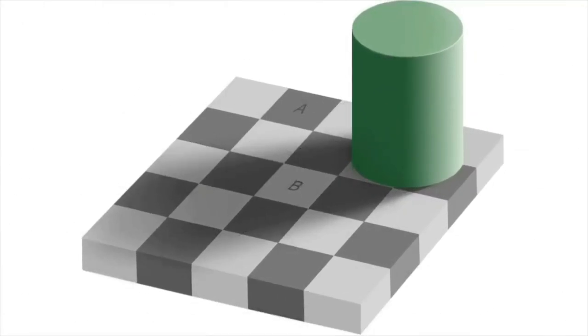So the picture shows a checkerboard with light and dark squares, partly shadowed by a green cylinder on the right corner. Now, let's focus on the two squares labeled A and B and compare their brightness. We'll probably see A as a dark square and B as a light square without a doubt. But are they really different in brightness? What if I tell you that the two squares have the same brightness or gray levels?